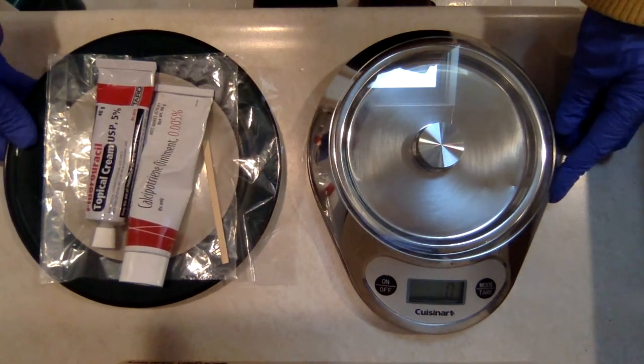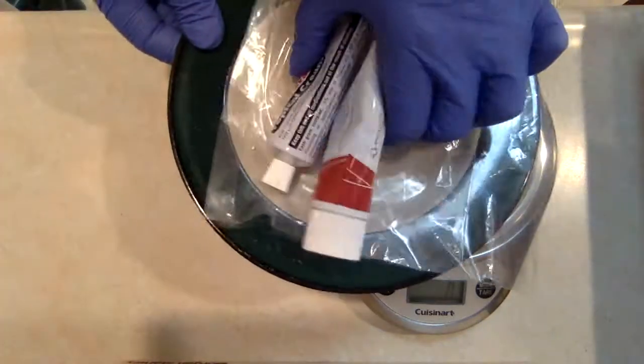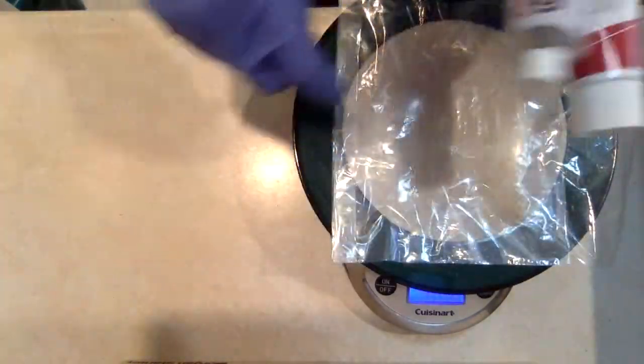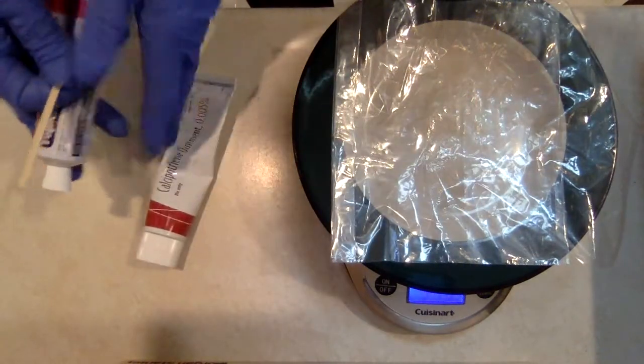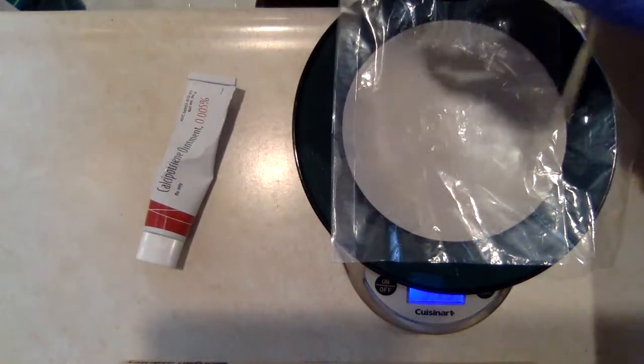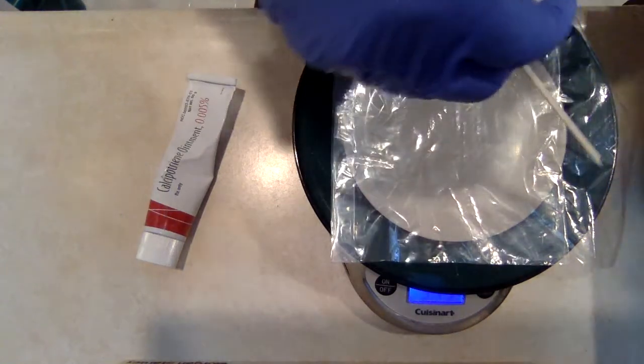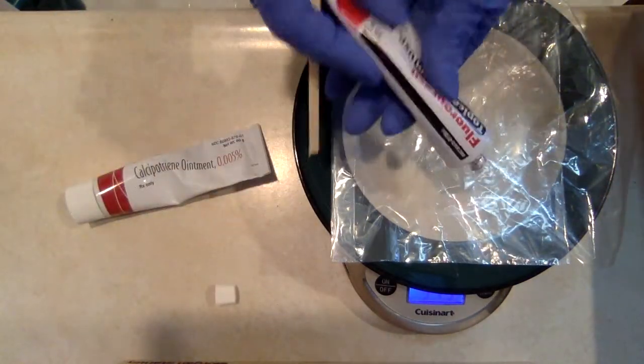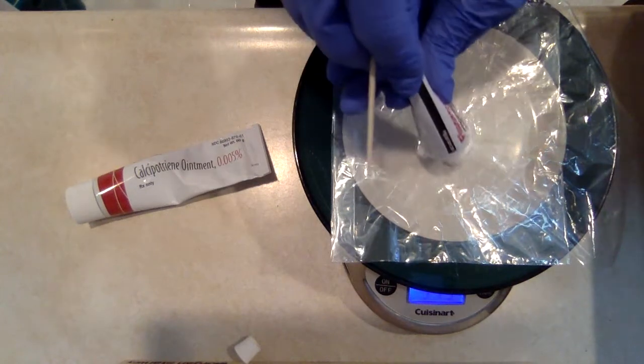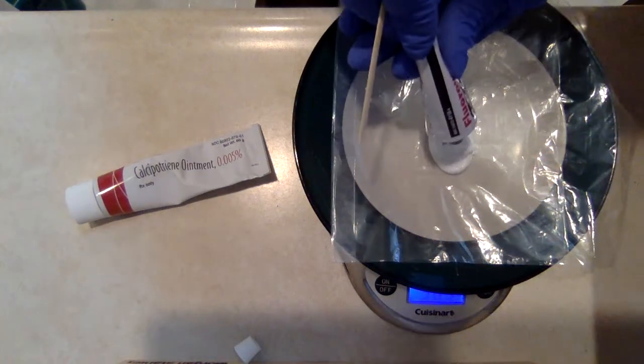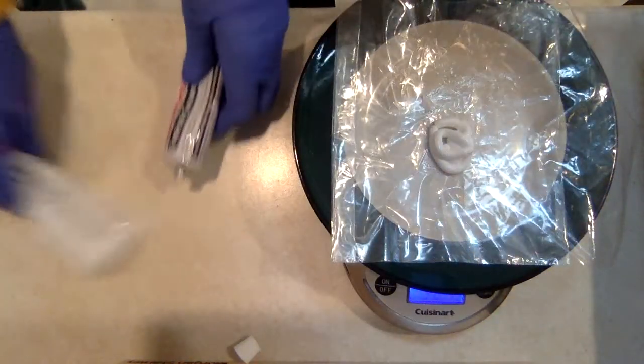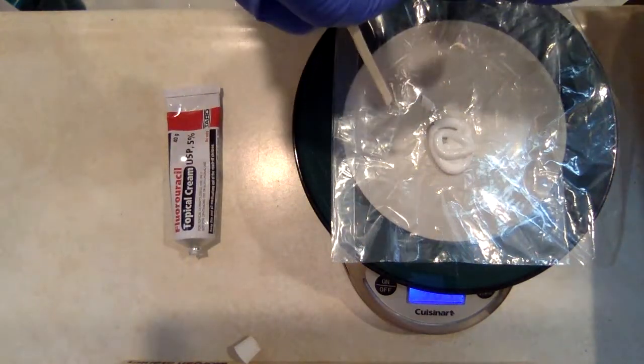I have a kitchen scale, so what I do is put a plate on the kitchen scale, a plastic bag, record the weight of the plate and bag, and add about five grams of one, then five grams of the other.